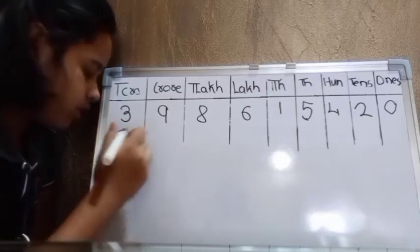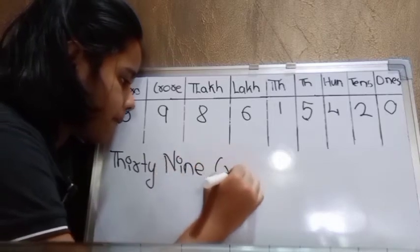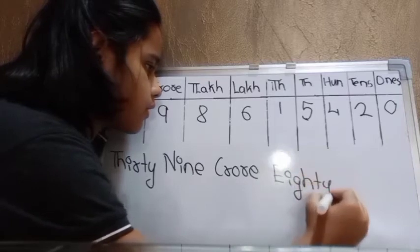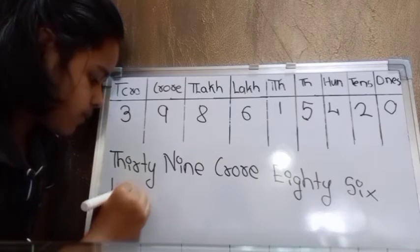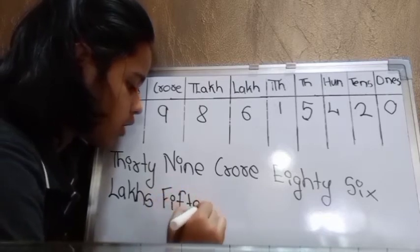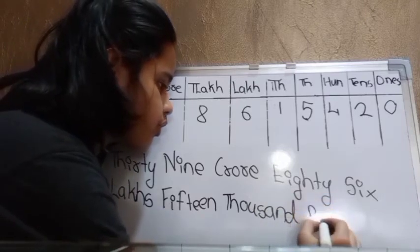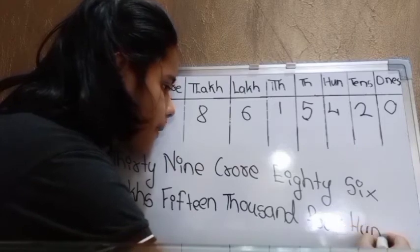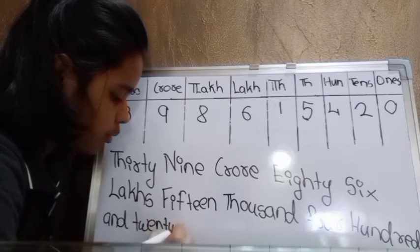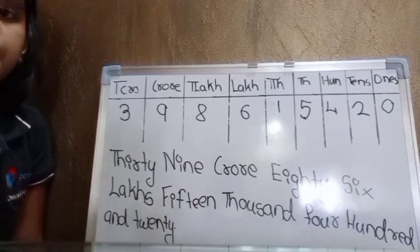So we have to write this number name on the board. The number found is 39 crore 86 lakhs 15,420. Thank you.